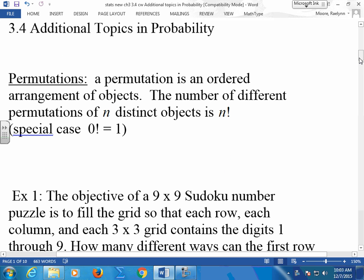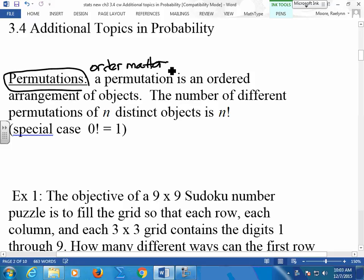So the one thing we talk about is permutations. The difference between permutations and combinations is the fact that order matters. It matters how you line things up. It matters what order they come in, what comes first, what comes second.